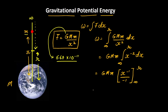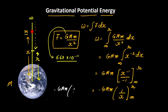This can be written as GMm, and the integration of x raised to the power minus 2 is x raised to the power minus 1 divided by minus 1, with limits from infinity to R. Taking the minus outside, it becomes minus GMm times 1 by x from infinity to R. So the final step gives minus GMm times 1 by R minus 1 by infinity, and 1 by infinity is 0, so this entire expression becomes minus GMm divided by R.